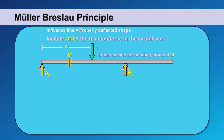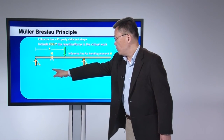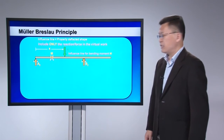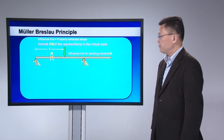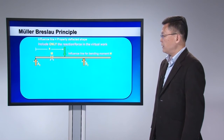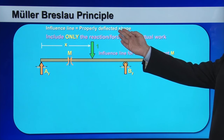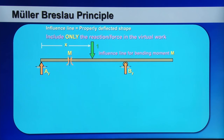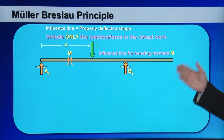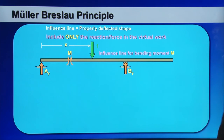Next, I will show how to construct an influence line for a bending moment at a particular cross-section using the Müller-Breslau principle. The Müller-Breslau principle tells us the influence line equals a properly deflected shape of the structure, so you need to create that shape intelligently so that it corresponds to the influence line you are looking for.